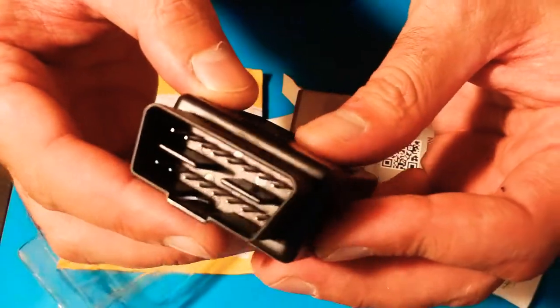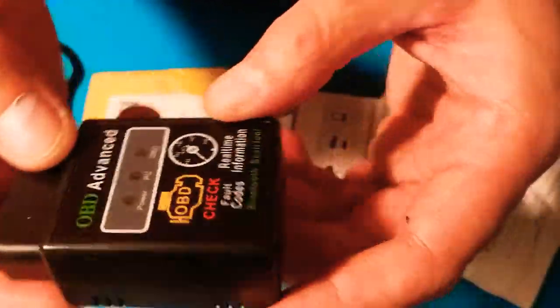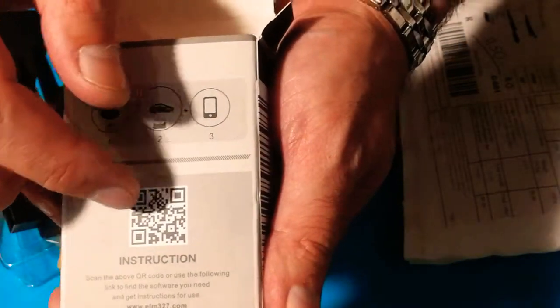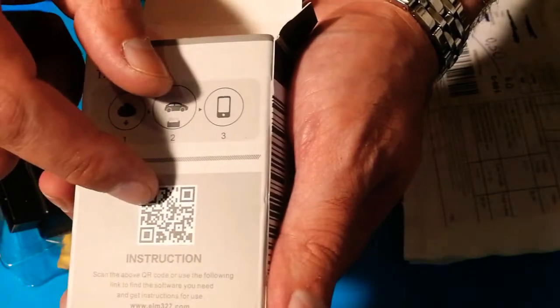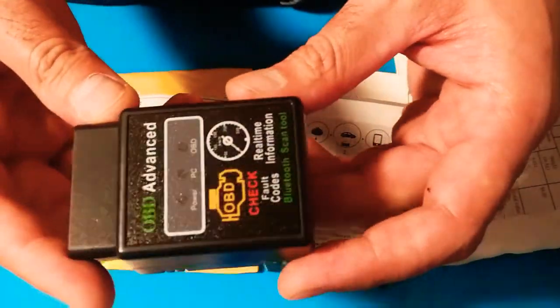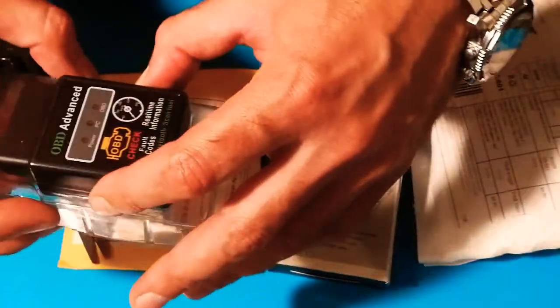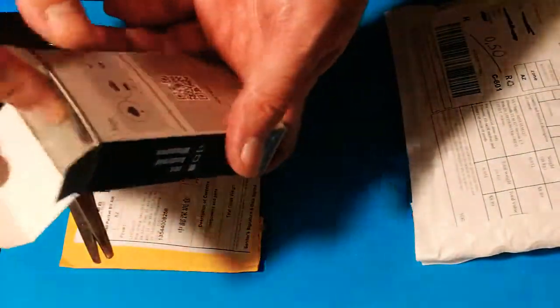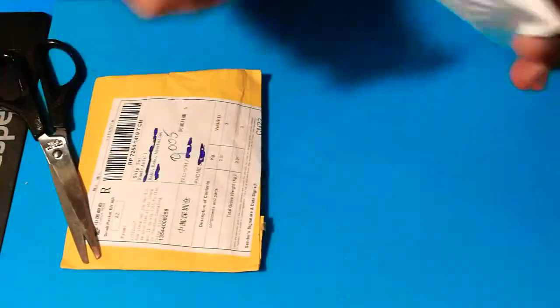You just put it on the car OBD interface and connect it via Bluetooth. I think you scan this QR code and it takes you to a website where you download the software that connects to this device and reads the codes from your car. So it's a very useful tool when you want to make a quick testing or quick checking of what's going on with your car.